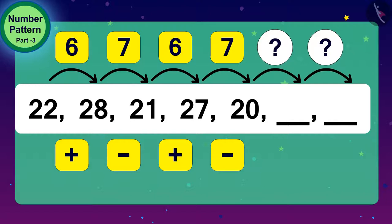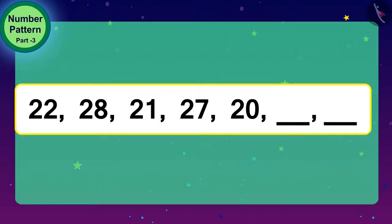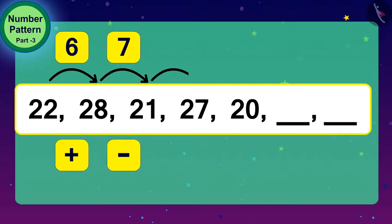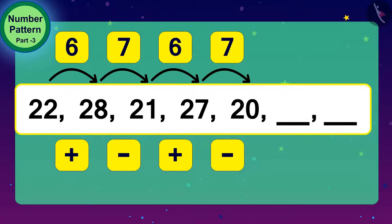Well, you are thinking right. This number pattern is being carried forward by adding 6 once and subtracting 7 the second time. So, what do we have to do to fill this blank space now? That's correct! We have to add 6 to 20. What will it be? 26.